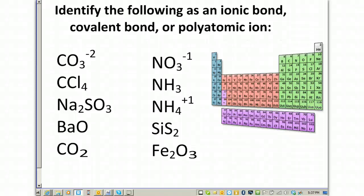Identify the following as ionic, covalent, or polyatomic. Notice on the right-hand side we have a periodic table, and I'm going to go ahead and draw in the staircase where it belongs, so that we can see our division between metals, metalloids, and nonmetals.